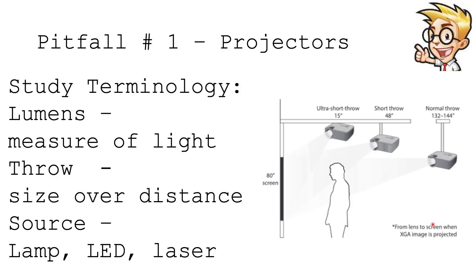Watch out for that. Make sure you study these terminologies. You need to know what a lumen is — a lumen is a measure of light, and you can tell the intensity of the light signal by lumens. Some standard projectors use about 1,000 to 2,000 lumens. The next one that caught me off guard is the throw. The throw is the size of the distance. Being able to measure the throw will help you when you need to assign a particular projector for a particular room or environment where there's too much or not enough light.